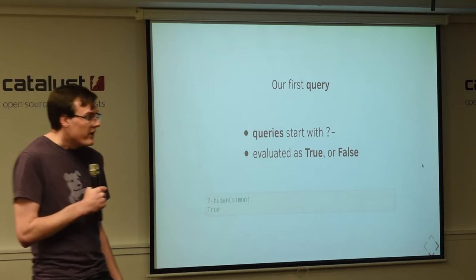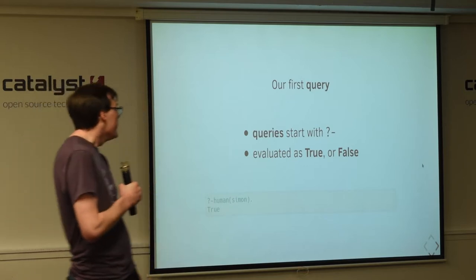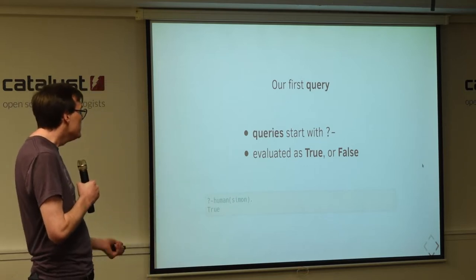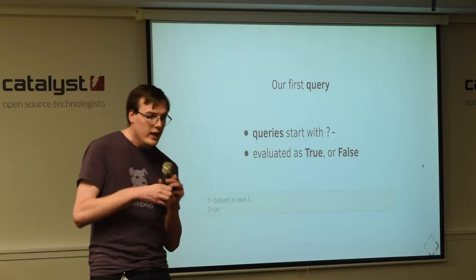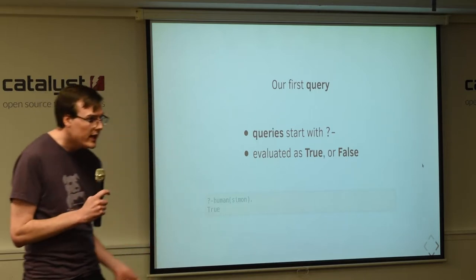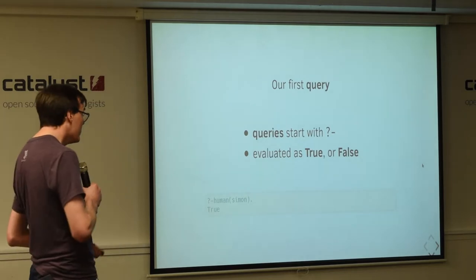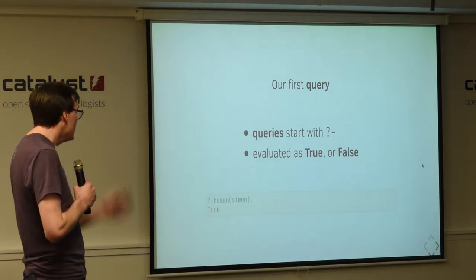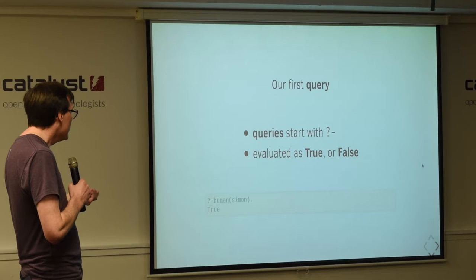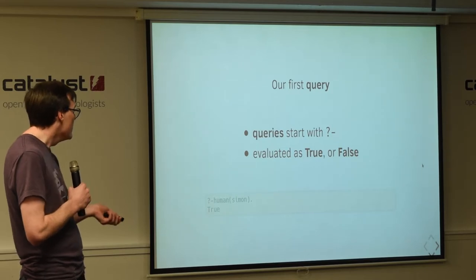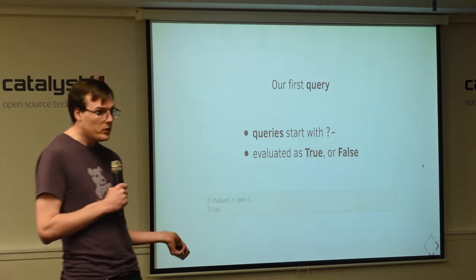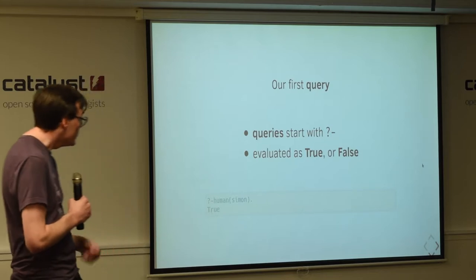So, once we have a fact, we can start querying our facts. The notation for this is that facts start with a question mark hyphen. So, if you see that, it means we're querying for a fact. So, if we query is Simon a human, prologue will tell us true because that's what we told prologue.